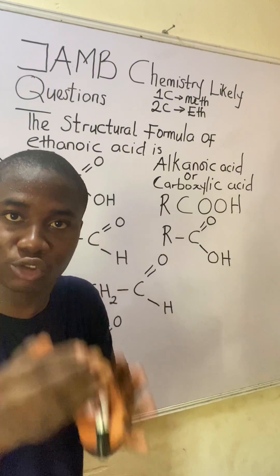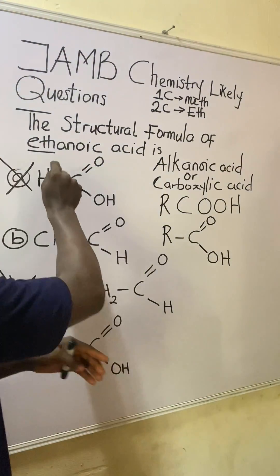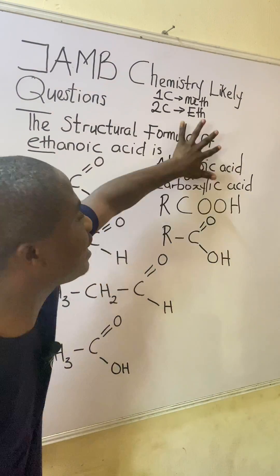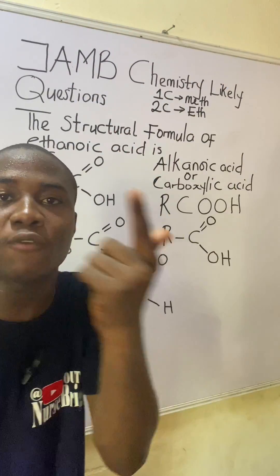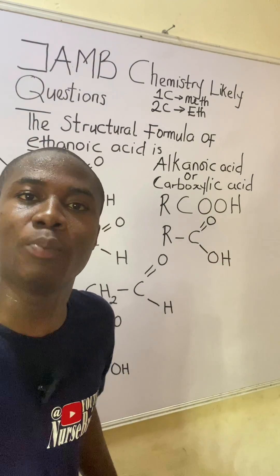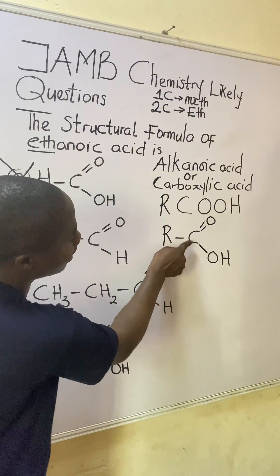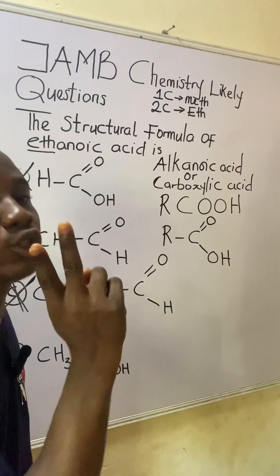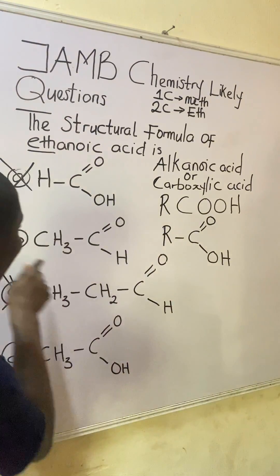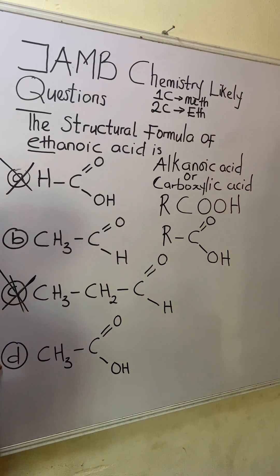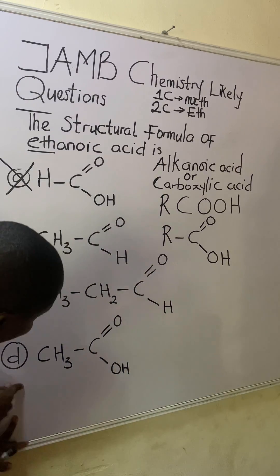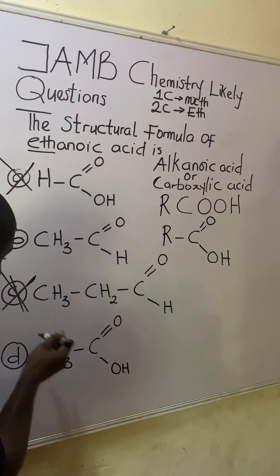We can now locate our answer. The functional group ending shows carbon double-bonded to oxygen and single-bonded to OH. Looking at options B and D and comparing which one corresponds to this functional group pattern, it is option D. This is the answer to the question — option D is ethanoic acid.